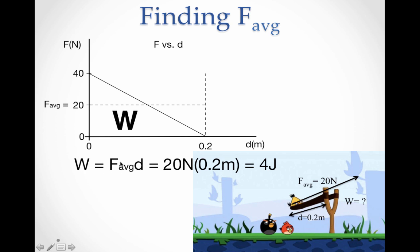So if we use that average force of 20 newtons times the distance that we averaged over of 0.2 meters, we multiply and we get 4 joules of work.